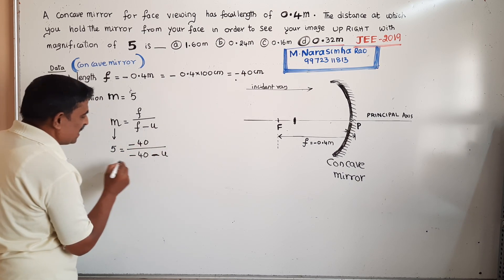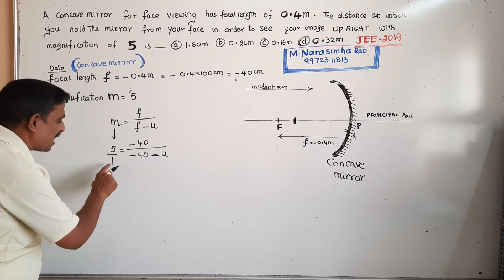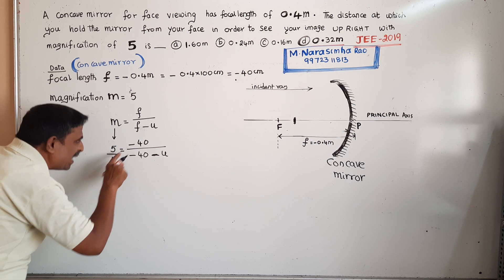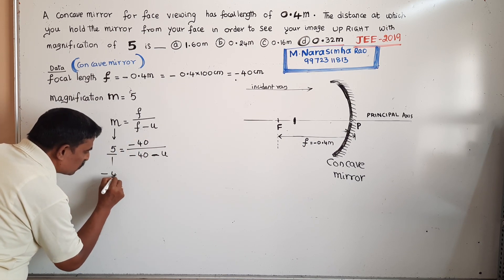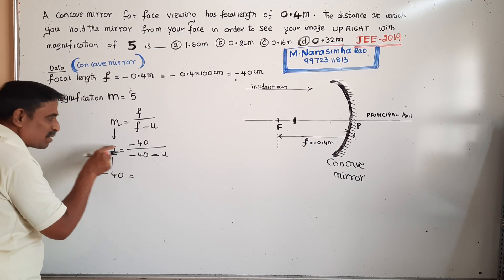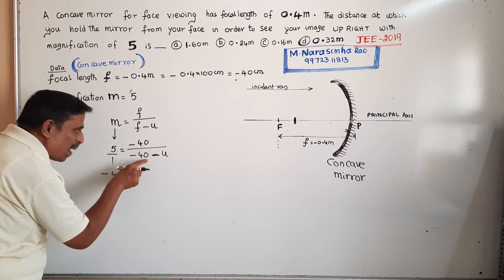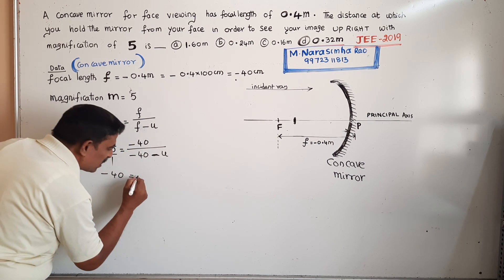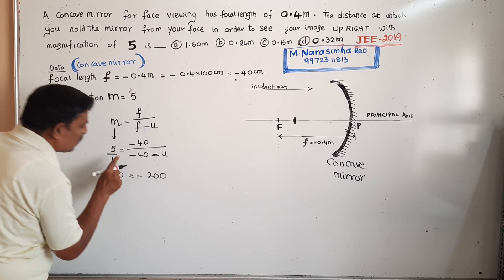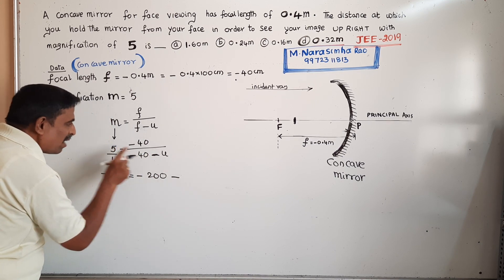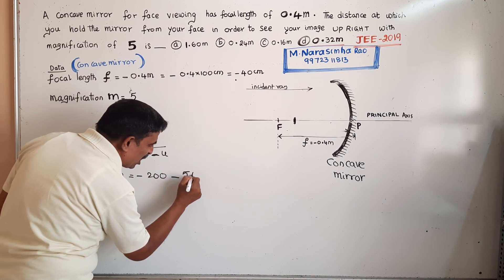u is the object distance. Using cross multiplication: 1 times minus 40 equals minus 40. And 5 times (f minus u) gives: 5 times minus 40 equals minus 200, minus 5u.